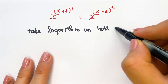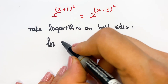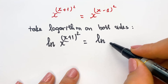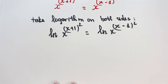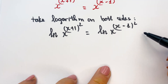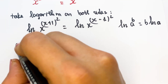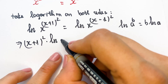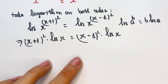So we can say: logarithm of x to the power (x+1)² equals logarithm of x to the power (x-1)². Everyone can apply the rule: logarithm of a to the power b equals b times logarithm of a. Therefore we can write: (x+1)² times logarithm of x equals (x-1)² times logarithm of x.